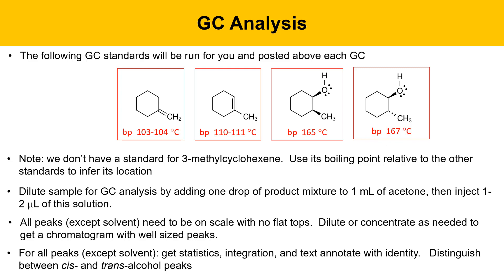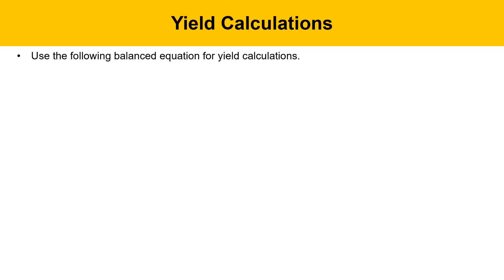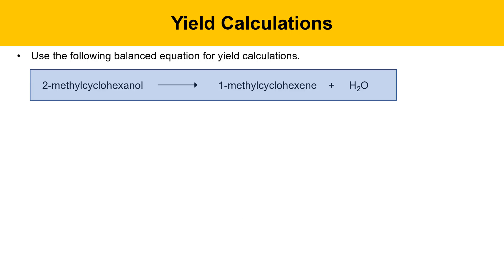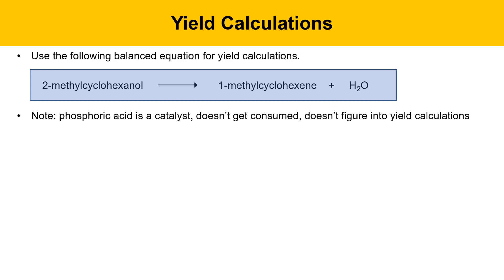The starting material is a mixture of cis and trans alcohols, which may appear in the product mixture as leftover alcohols. For yield calculations, use the balanced equation showing the formation of 1-methylcyclohexene — the major product. Note that phosphoric acid is a catalyst and is not consumed, so it doesn't figure into the yield calculations. Although you need phosphoric acid for the reaction to proceed at a reasonable rate, it doesn't impact the yield.